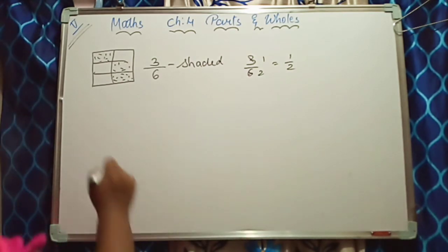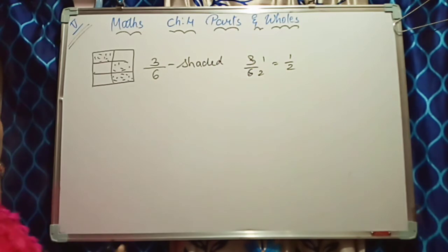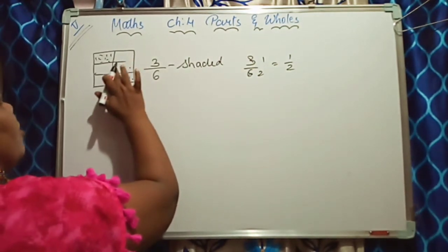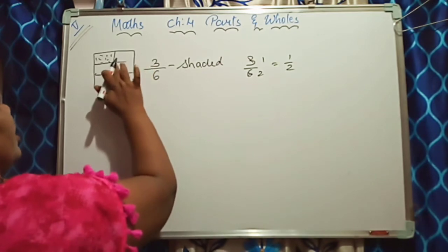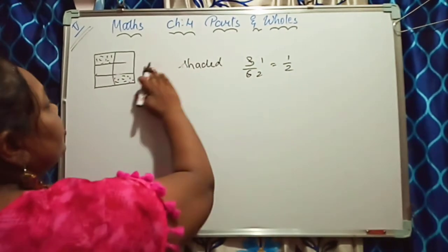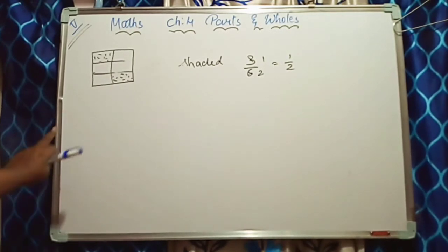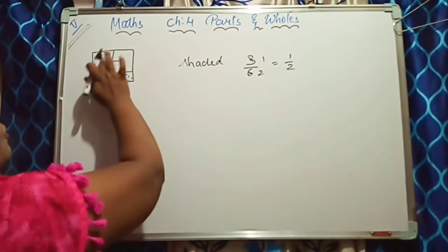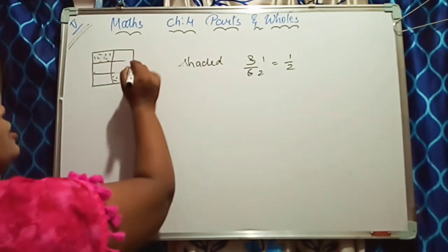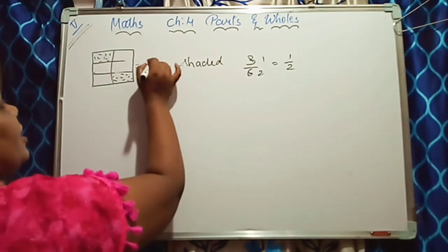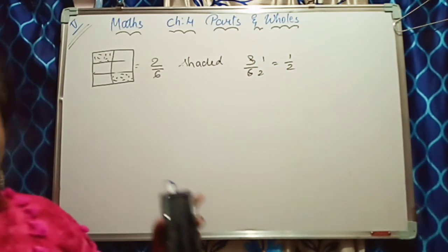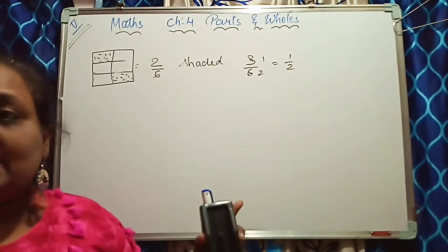Now the second figure is like this. From this, I have removed some shading and I have to write the shaded parts. How many parts are there? One, two, three, four, five, six. So what will you write? Two parts are shaded. So we write two upon six.